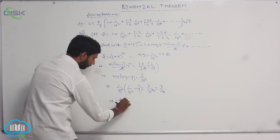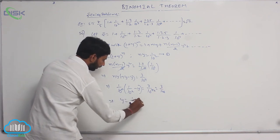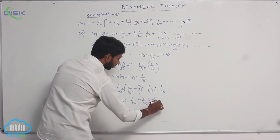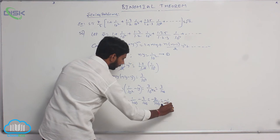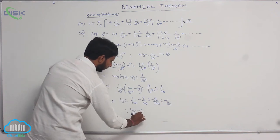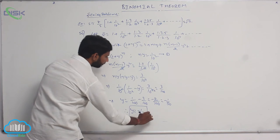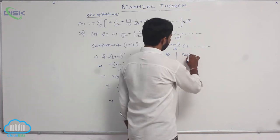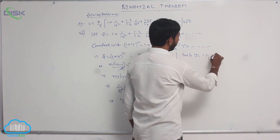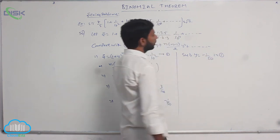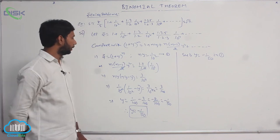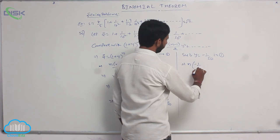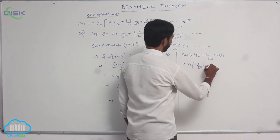That implies y = 1/100 - 3/100 = -2/100 = -1/50. Therefore y = -1/50. Substituting y = -1/50 into condition number 1, we get n × (-1/50) = 1/100.